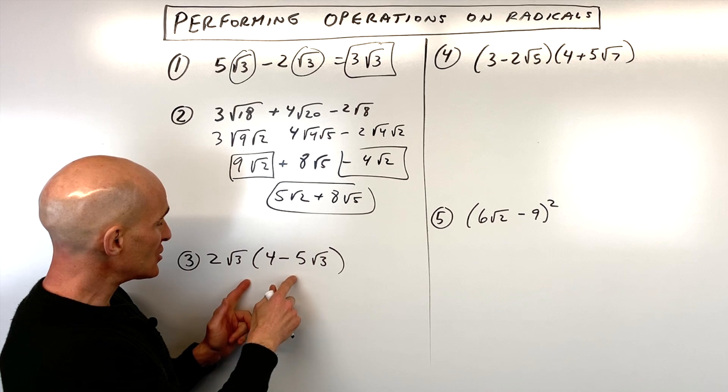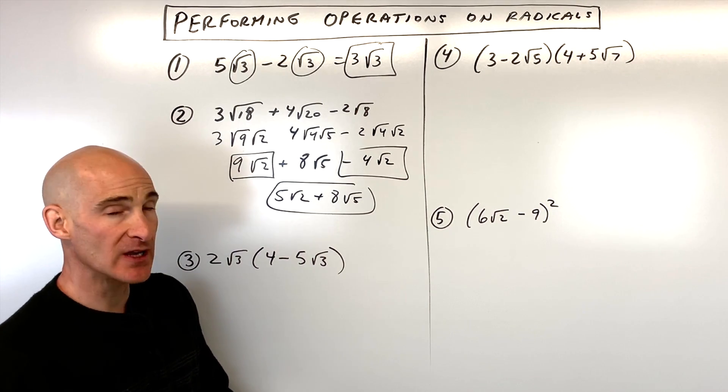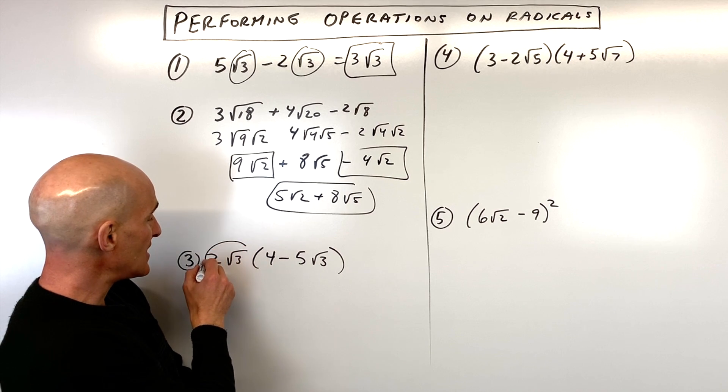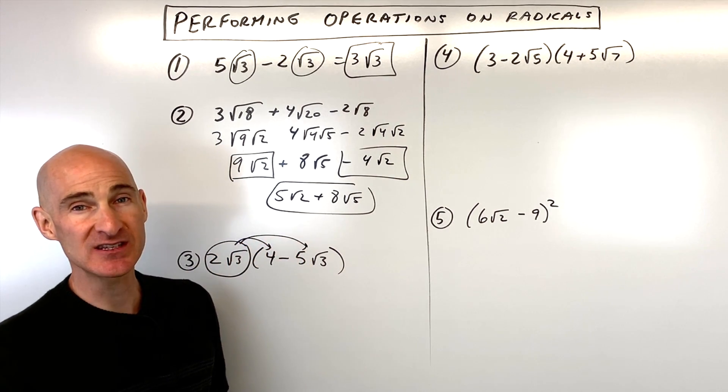For number three, we're moving into some multiplication. We've got two square root of three times a quantity four minus five square root of three. So what you're going to do here is you're going to take the two root three with the quantity on the outside, distribute it into the parentheses, and we're going to simplify.